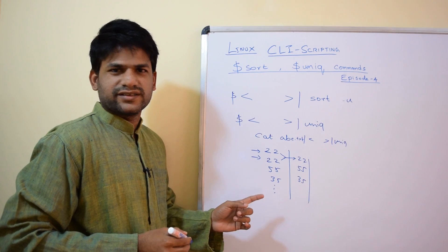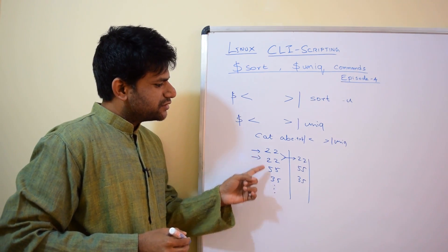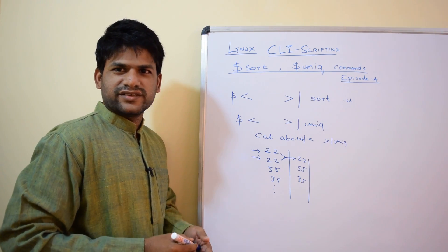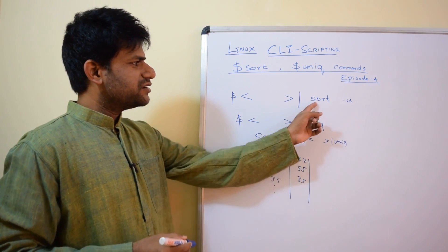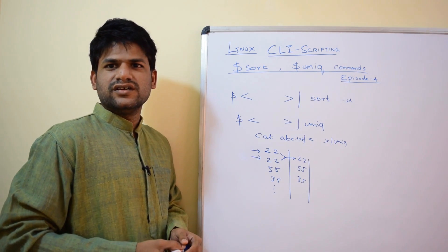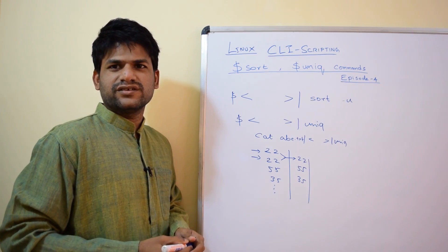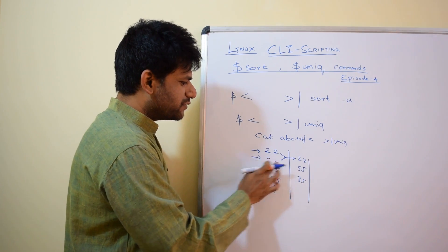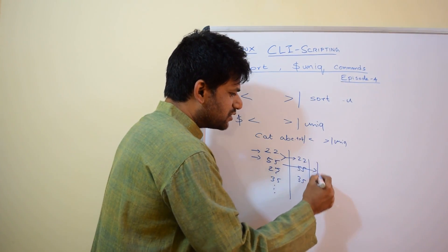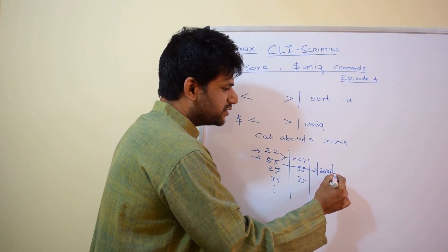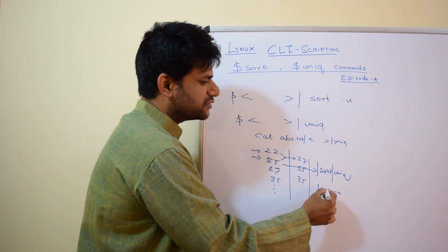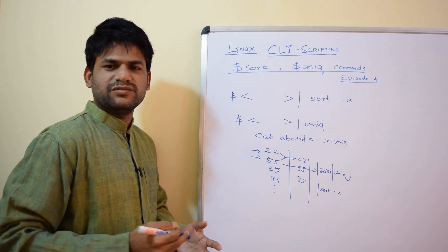If the output returns something like 22, then 55, then 22 again, then 35 — uniq is not going to help and the duplicates will stay. In that case you first need to sort, then apply uniq. This is why I'm covering both commands together. Alternatively, you can just use sort -u to get unique entries directly.